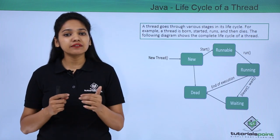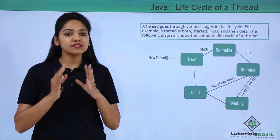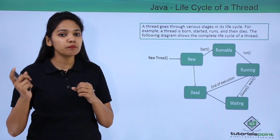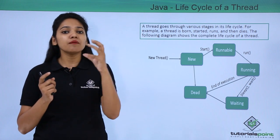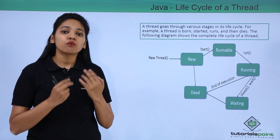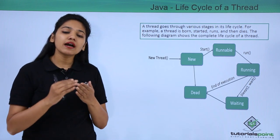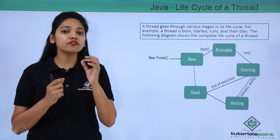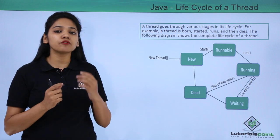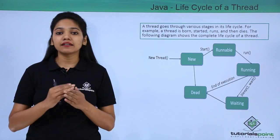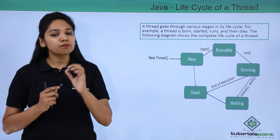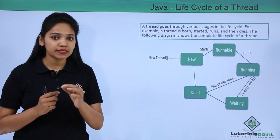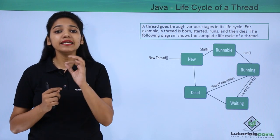But why do you need threading? A thread is a path followed to execute a program, and a program may have a number of threads. Till now, we have been running programs that perform a single task. But what if you want your program to perform multiple tasks at a time? To perform multitasking, it is either possible through multiprocessing or multithreading.